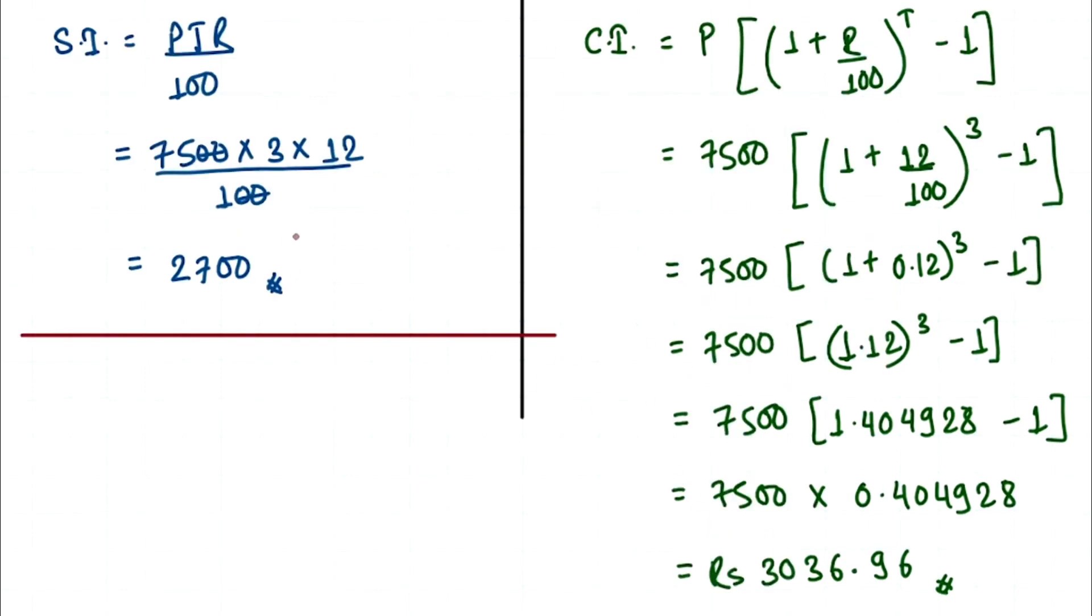Now we have our compound interest and simple interest, we can easily find the difference. Compound interest minus simple interest is 3036.96 minus 2700, which equals rupees 336.96, and done, we have solved our question.